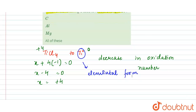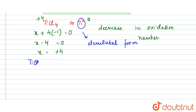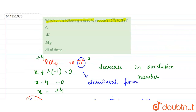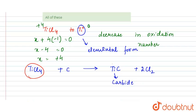Now let's check carbon: TiCl₄ + C forms TiC, that is titanium carbide, and 2Cl₂. This means carbon does not reduce titanium to its elemental form — carbon is incorrect. Also, TiCl₄ doesn't react with aluminum, so aluminum doesn't work either.